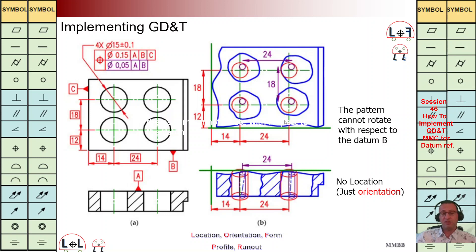If we satisfy this condition, the second line condition is going to be satisfied. For the top line, it is the same as before — it is perpendicular to A, we have a cylinder, and we have basic dimensions with respect to B — for example 12 and 18 — and we also have basic dimensions with respect to C, shown as boxed numbers.